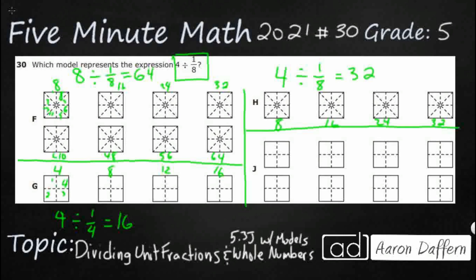Let's check J just to make sure it's incorrect. Oh, it looks like they kind of flipped it here. Look, we've got 8 wholes and we're dividing it by fourths, rather than 4 wholes dividing it by 8ths. And let's see. I've got 4, 8, 12, 16, 20, 24, 28, 32.